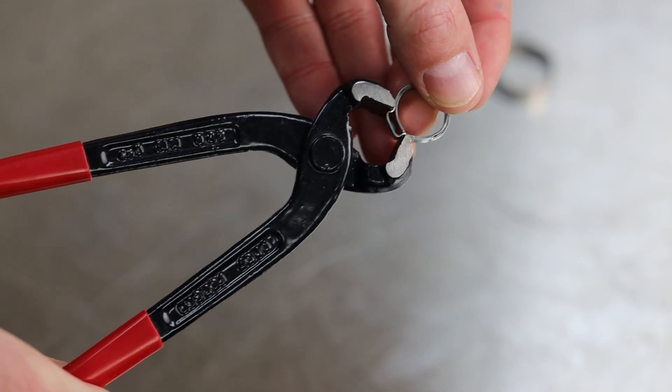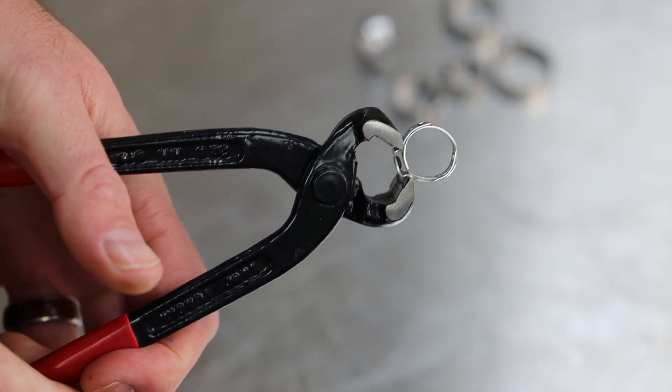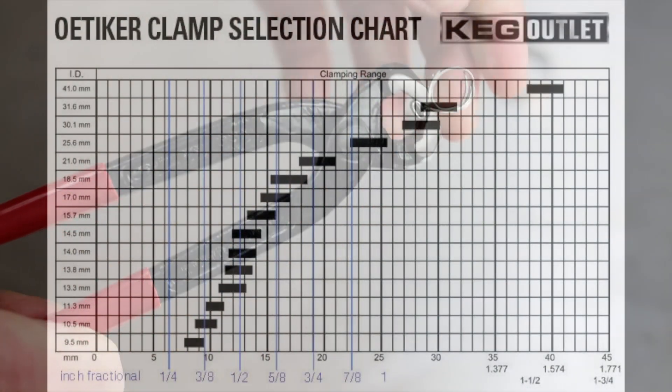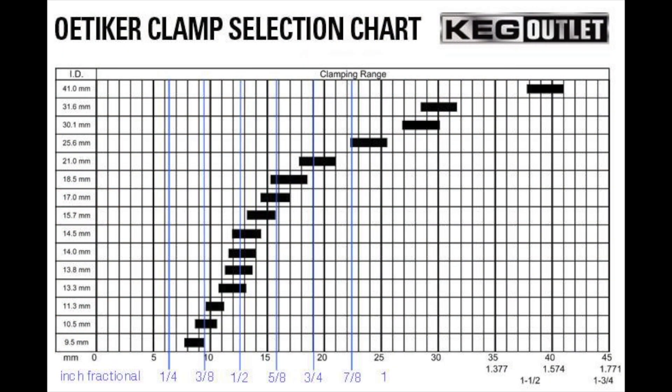You can refer to the clamp chart we have listed at kegoutlet.com. This chart will show you the open size inner diameter as well as the closed size inner diameter.